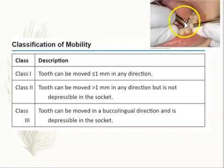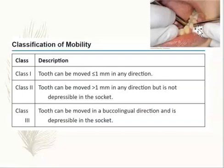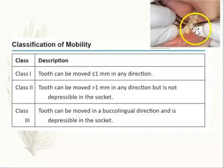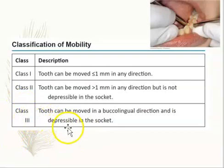If you can move the tooth less than one millimeter, it's class one. Class two is if it can be shifted one to two millimeters. Class three is if it's mobile more than two millimeters, and also if it is depressible in the socket — that is class three mobility.